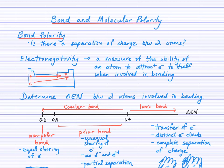Okay, this lesson is about bond and molecular polarity, two distinct concepts. First we'll look at bond polarity. Bond polarity answers the question, is there a separation of charge between two atoms? So we're looking to see if there's a shift in electron density in the space between two atoms involved in a bond. First we need to consider the electronegativity, the strength of that atom, the ability of that atom to attract electrons to itself when it's involved in bonding.